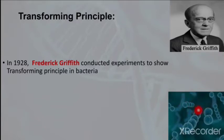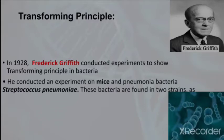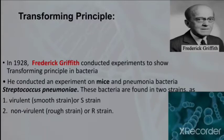Here is a picture of Streptococcus pneumoniae bacteria, which is responsible for causing pneumonia. This bacteria has two forms: a virulent form and a non-virulent form. Virulent means harmful — it is also known as the S strain, which stands for smooth strain. Non-virulent means non-harmful — it is also known as the R strain, or rough strain.